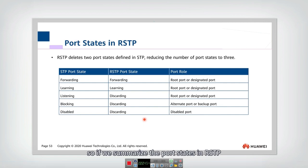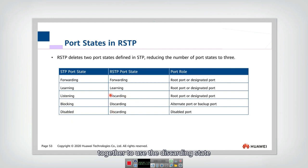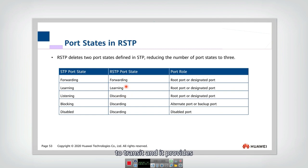If we summarize the port states in RSTP, they have aggregated three different states from STP together. They combine listening, blocking, and disabled into a single discarding state. The port only needs to transition from discarding to learning, and then to forwarding. This takes shorter time to transit and provides fewer port states overall.